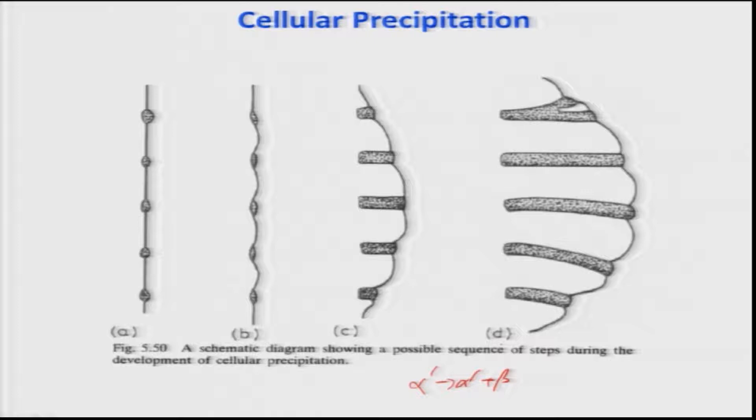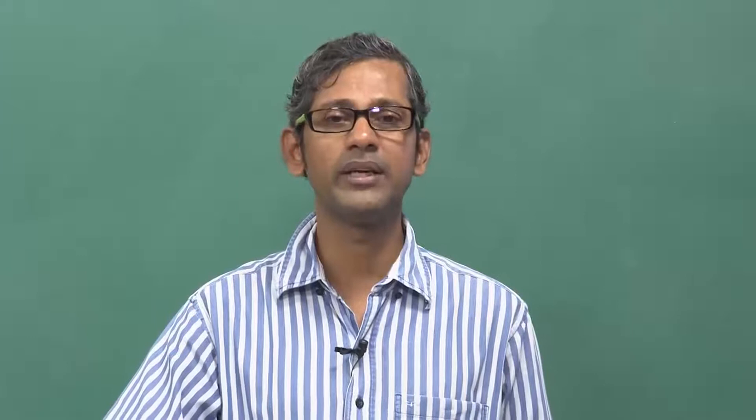Alpha prime is the supersaturated solid solution; alpha is the equilibrium phase with lower solute content; beta is the equilibrium precipitate. So the supersaturated alpha prime decomposes: beta precipitates out of alpha, leaving alpha with less solute. The mechanism by which this transformation happens is still debated and not yet fully understood, and it differs from one alloy to another — that is one of the problems.